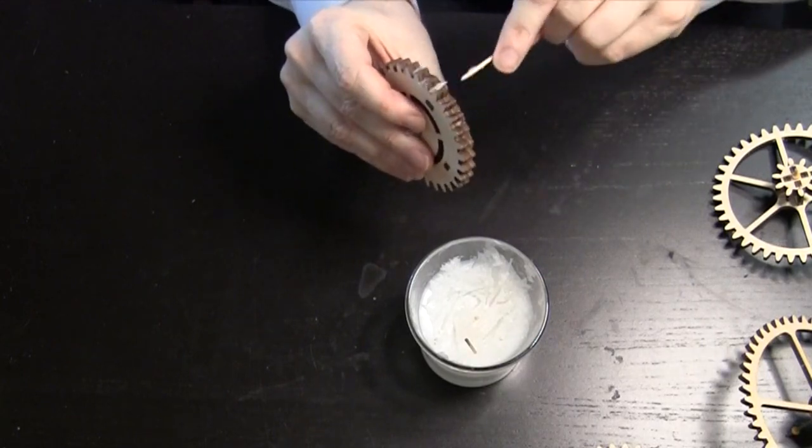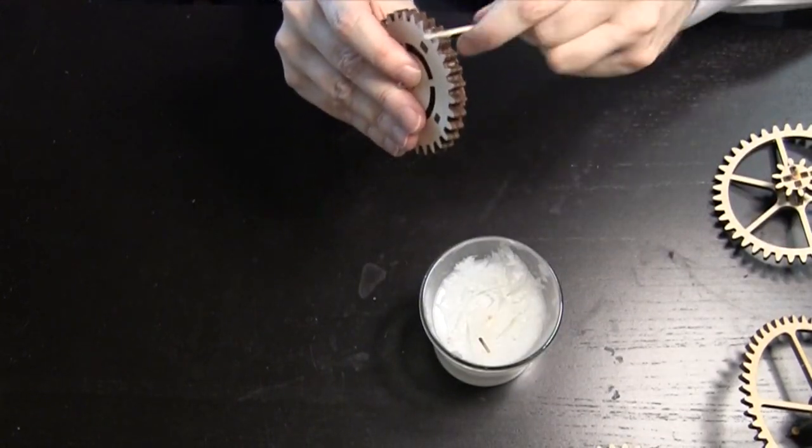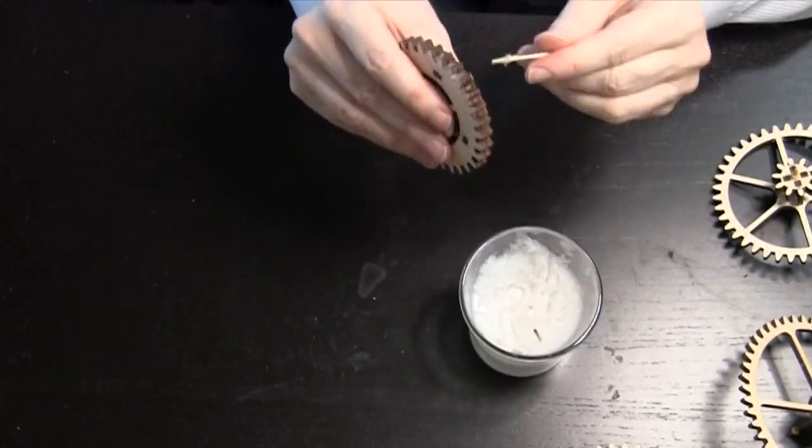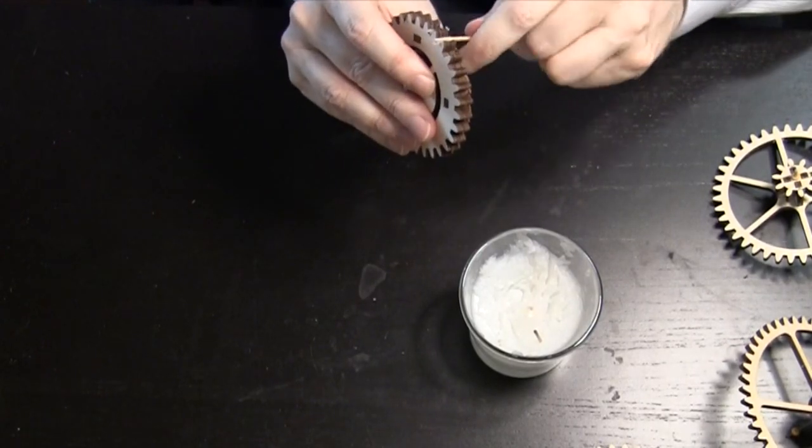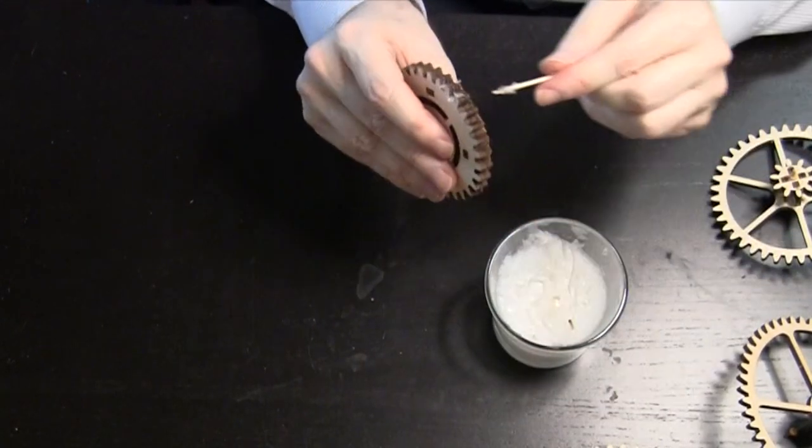You want to do this on all wood-on-wood moving parts. On the teeth that mesh with other gears. On the parts that hold the gear in place. Although not on metal or plastic.